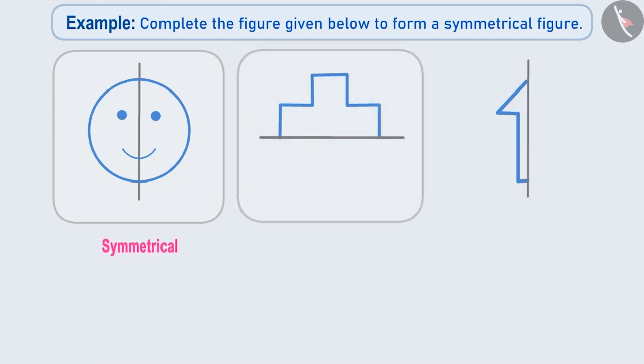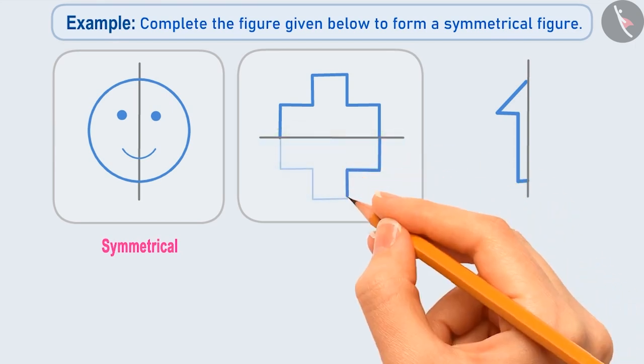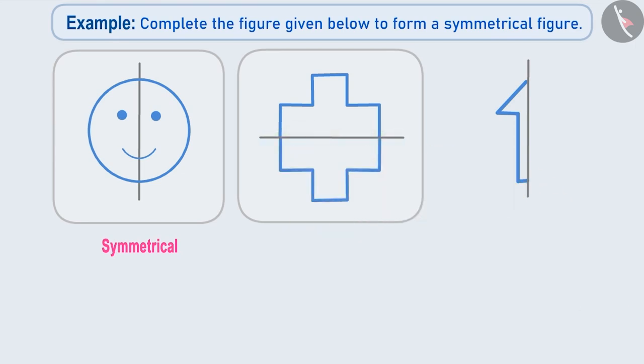Now let us talk about the second figure. We have been given the top part and have to find the bottom part. Suppose the upper part is on the ground and we are seeing its reflection below in water. So imagine how this figure will look. Give it a thought. Absolutely right! It will look like this. In this way, we can complete the second figure.